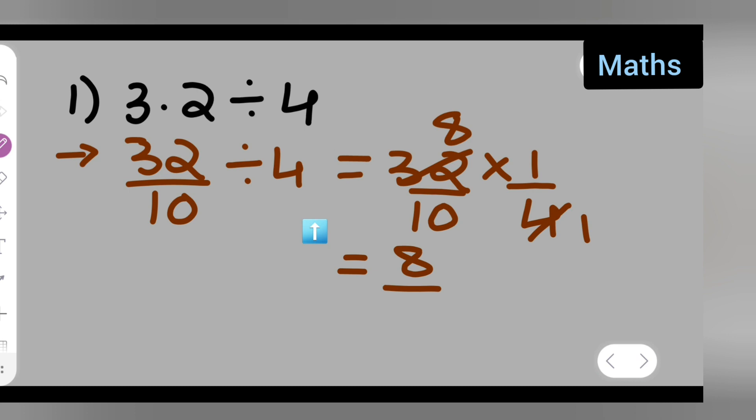So your answer is 8 upon 10, which is equal to nothing but 0.8. This is your answer. So you'll have to write this in the decimal form because 10 is in the denominator, so it will be 0.8.